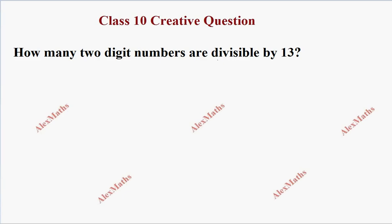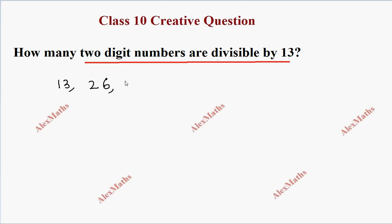Hi students, this is Alex. The question is about how many two-digit numbers are divisible by 13. So the two-digit multiples of 13 are 13, 26, 39... and the last two-digit multiple is 91.